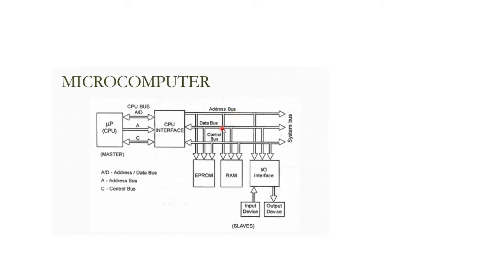Through the data bus, you send data to the microprocessor for manipulations. For example, if you want to add the numbers 5 and 3 in the microprocessor, you send them through the data bus. Through the control bus, the CPU performs read and write operations for both input and output devices.